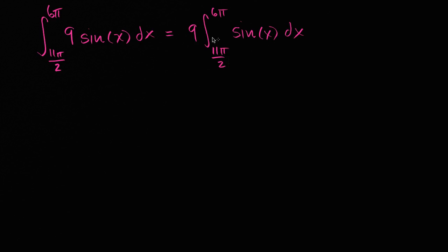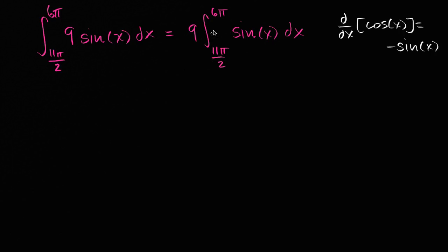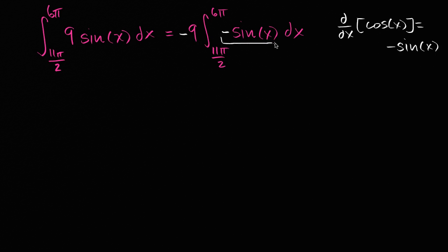What's the antiderivative of sin(x)? We know that the derivative with respect to x of cos(x) is equal to negative sin(x). So can we construct this so we have negative sin(x)? If I multiply by negative one twice — writing it as negative nine times negative sin(x) — that still equals 9sin(x), and now negative sin(x) matches the derivative of cos(x).